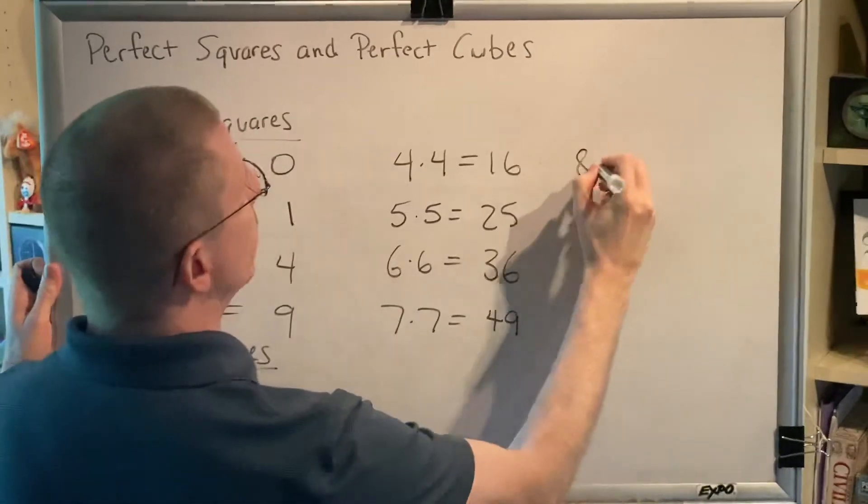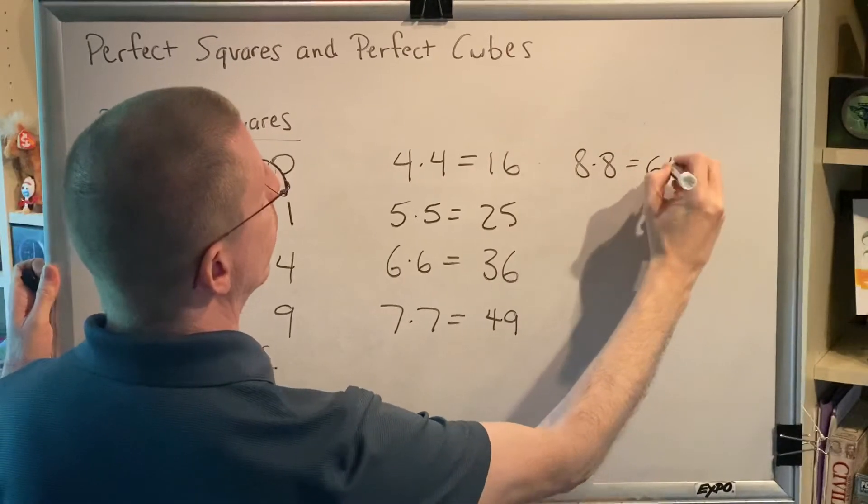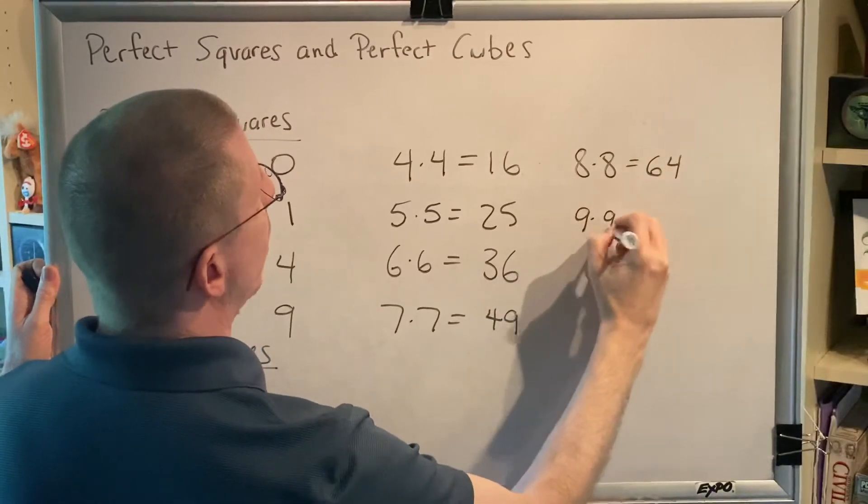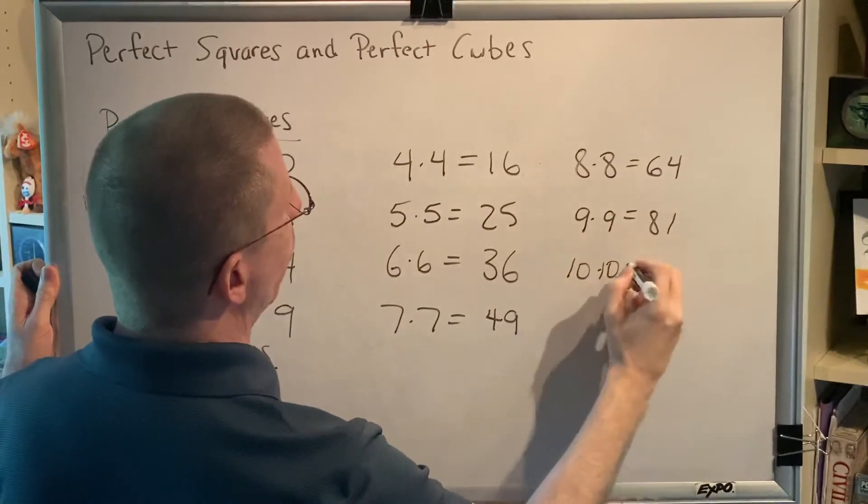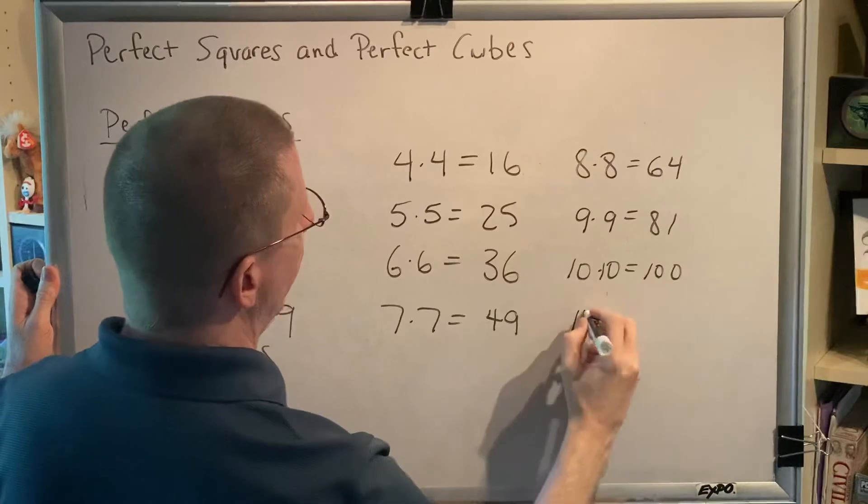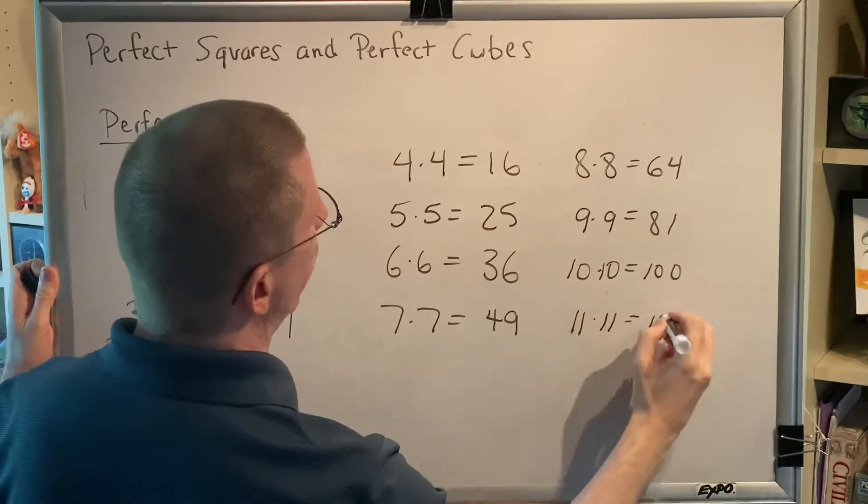Eight times eight equals sixty-four. Nine times nine equals eighty-one. Ten times ten equals one hundred. Eleven times eleven equals one hundred twenty-one.